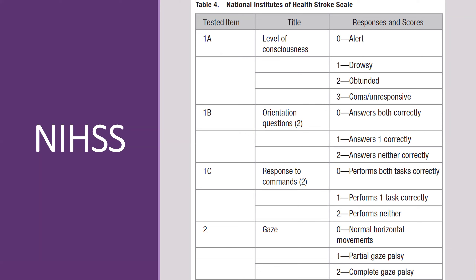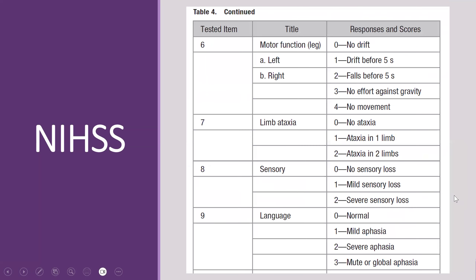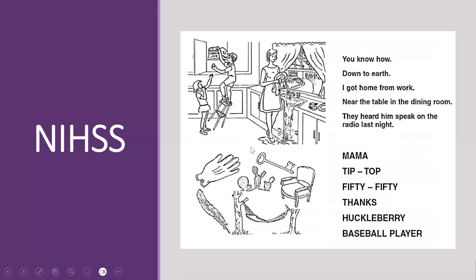We should perform what we call the NIH Stroke Scale — a scale to indicate the severity of the stroke. It is more of a physical examination with scores. We test the level of consciousness, ability to be oriented in answering two questions, response to commands, gaze, visual field, facial movement, motor examination with limb drift for the upper limb for 10 seconds and lower limbs for five seconds, presence of ataxia, sensory involvement, and language. For language, we use the NIH stroke scale language examination — the cookie theft picture — for reading, testing difficult words to check for dysarthria, and naming. If the score is zero, there are no stroke symptoms. One to four is minor stroke; five to fifteen, moderate; sixteen to twenty, moderate to severe; twenty-one to forty-two, severe stroke.